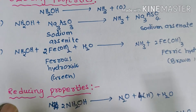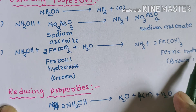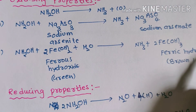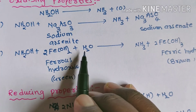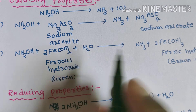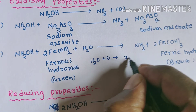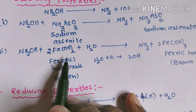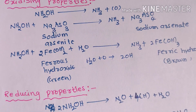Hydroxylamine also oxidizes ferrous hydroxide to ferric hydroxide. Ferrous hydroxide has green color whereas ferric hydroxide has brown color. From hydroxylamine we get one oxygen atom; it combines with water to give two hydroxyl (OH) groups, written as H₂O + O → 2OH. These OH groups are absorbed by ferrous hydroxide and convert it into ferric hydroxide.